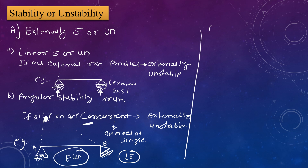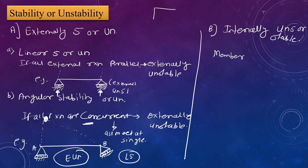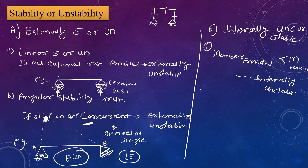Next is internally unstable or stable structure. If member provided is less than member required, then that structure is internally unstable. If member provided is greater than or equal to member required, then this is the condition of an internally stable structure.